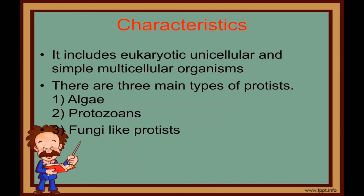Kingdom Protista includes eukaryotic, unicellular, and simple multicellular organisms. They are commonly called phytoplanktons. They are classified into three main types: algae, protozoans, and fungi-like protists. Animal-like protists lack cell walls and are heterotrophs. They are primitive animal forms. Locomotory organs include pseudopodia as seen in Amoeba, and cilia as seen in Paramecium.